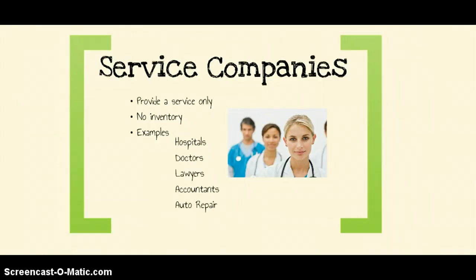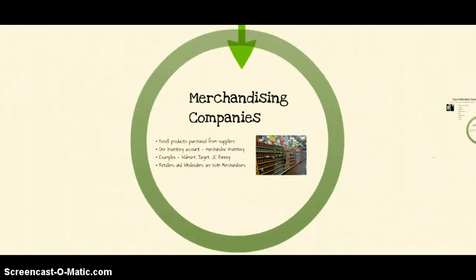The next type of company is a merchandising company. These companies resell products purchased from suppliers. They only have one type of inventory account, which they call merchandise inventory. Examples of merchandising companies are JCPenney, Walmart, Target, and Kroger — all those companies that buy from a supplier and resell to the consumer.